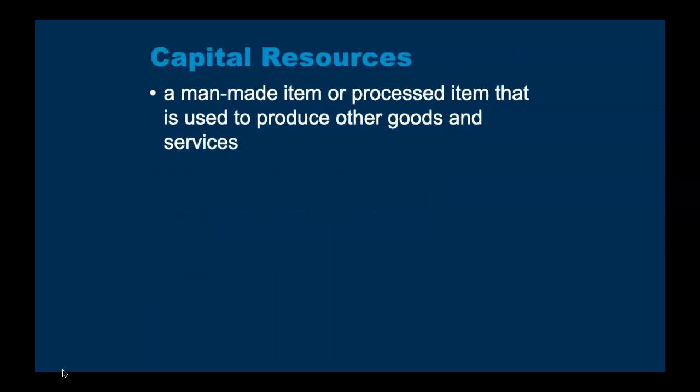Another category of the factors of production is capital resources. A capital resource is a man-made or processed item that is used to produce other goods and services. Highlight this, because it's really the thing that will help you understand capital resources: they've got to be man-made, and they're a man-made thing used to make other things.